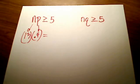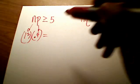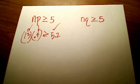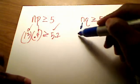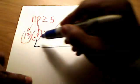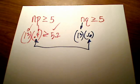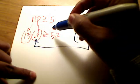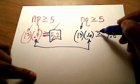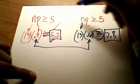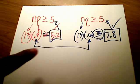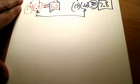Now checking nq: since p and q are complements, q must be 0.6, and 13 times 0.6 equals 7.8 — also greater than or equal to 5. Both conditions are satisfied, so I can use the normal distribution to approximate the binomial. Now I can proceed with the approximation.